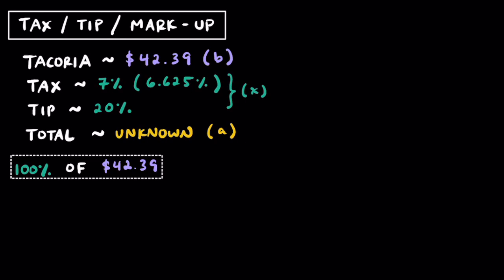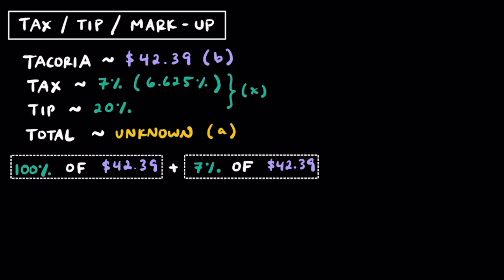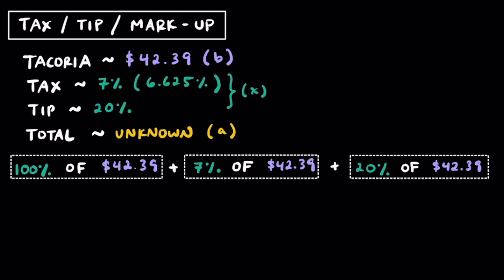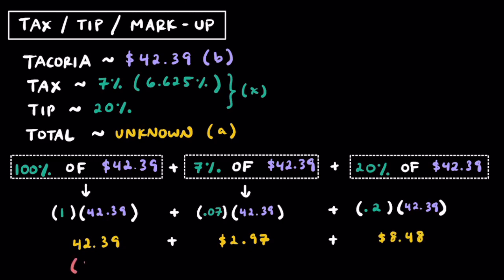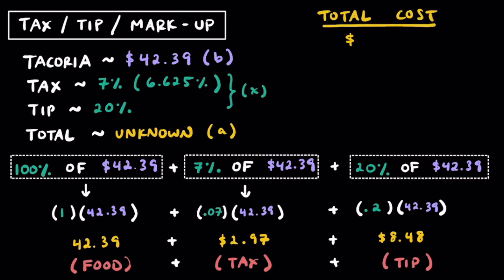B represents the original cost of the food, x represents the tax and tip percentages being added, and A represents the final cost we're going to pay. We have to pay 100% of $42.39, then 7% of $42.39 for tax, and then 20% of $42.39 for tip. As decimals: 1 times 42.39 equals 42.39; 0.07 times 42.39 rounds to 2.97; and 0.2 times 42.39 rounds to 8.48. Adding these three together — the food, the tax, and the tip — we get a final price of $53.84.